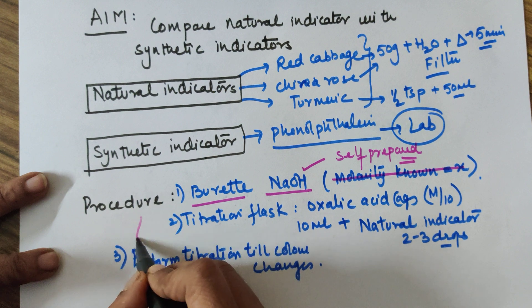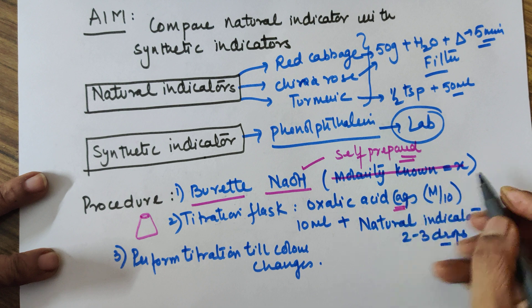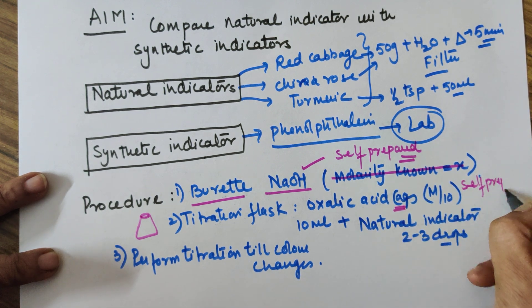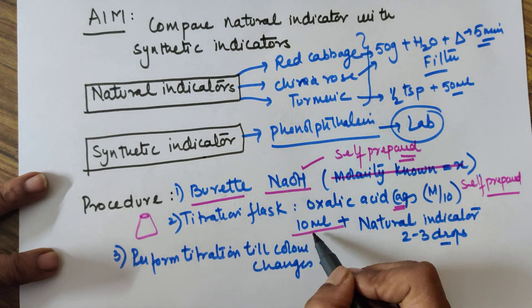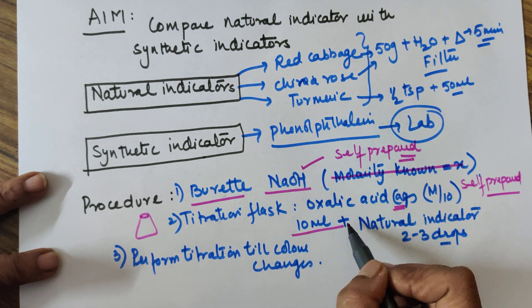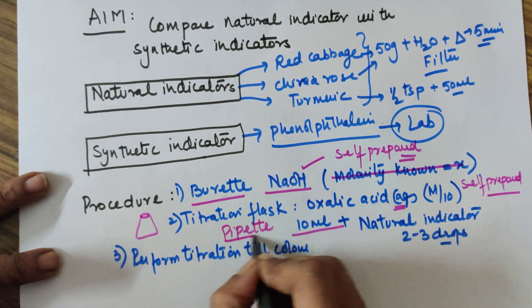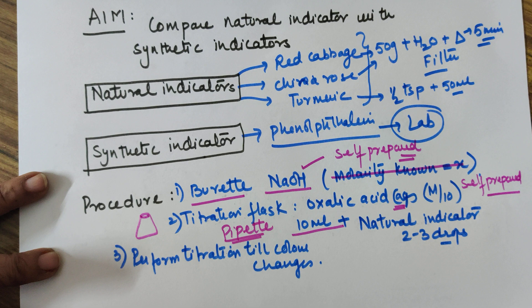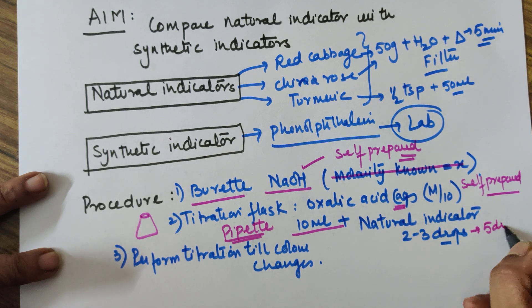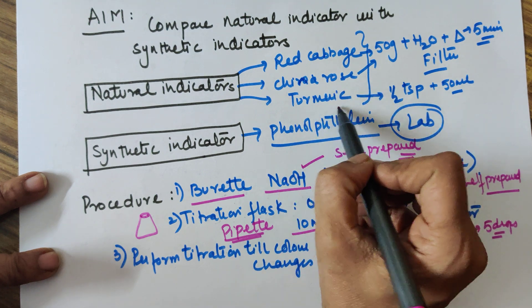In the titration flask, which is a conical flask, you need to add your oxalic acid solution, again the self-prepared. Around 10 ml of oxalic acid is what you require. If your school has a 25 ml pipette, then you use that, otherwise you can use a 10 ml pipette. Natural indicator is normally 2 to 3 drops, it can go up to 5 drops also.